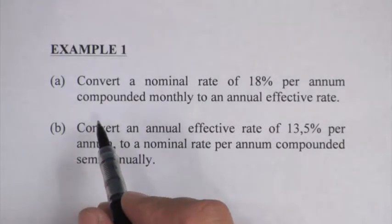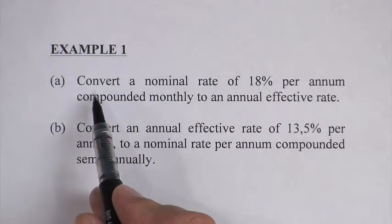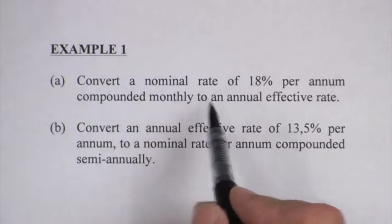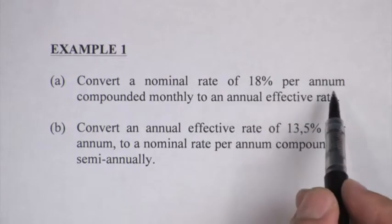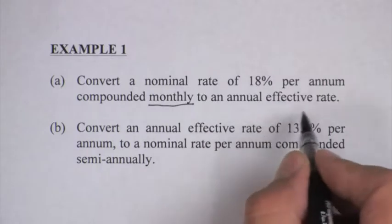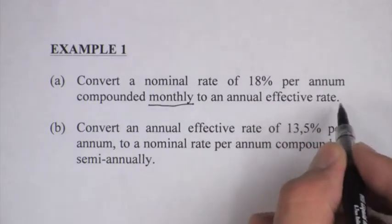In our first example, they say that we must convert a nominal rate of 18% per annum, compounded monthly, that is very important, to an effective yearly rate.